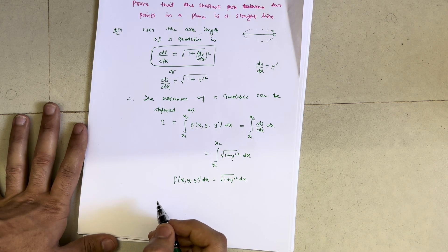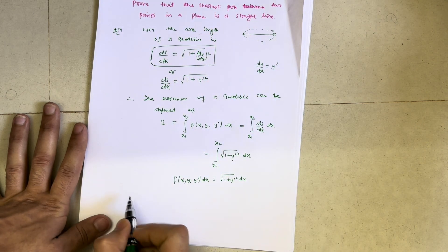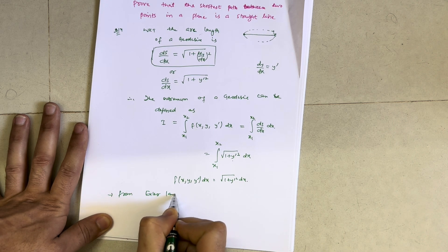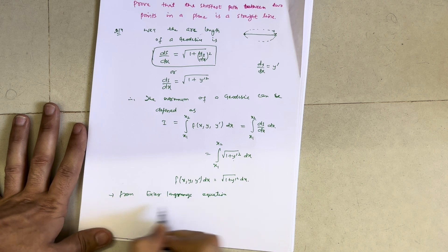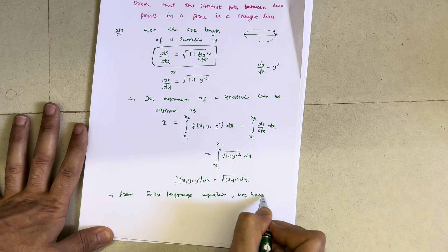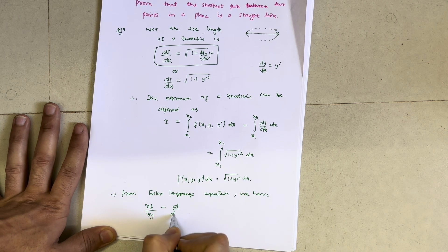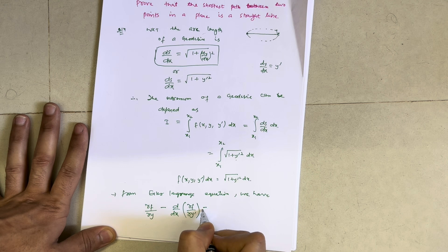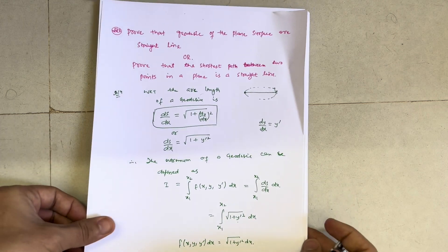There are three equations by which we can prove that the shortest path between two points in a plane is a straight line. The third approach is the Euler-Lagrange equation: ∂f/∂y − d/dx(∂f/∂y') = 0. This is the Euler-Lagrange equation which we have to solve further.